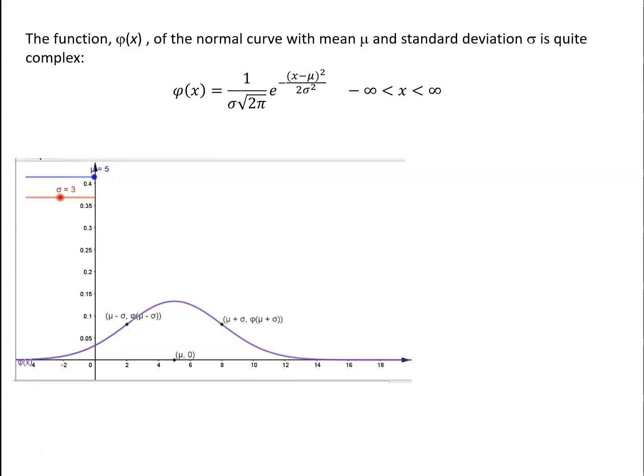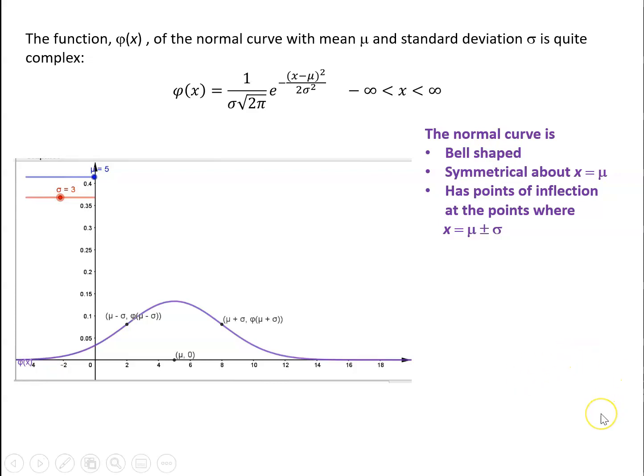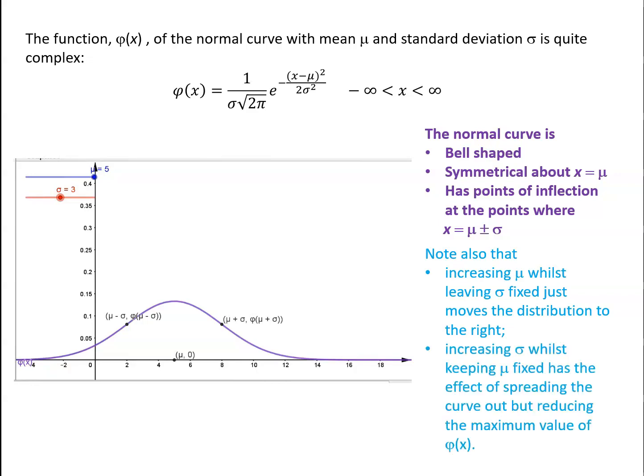So we've seen that the normal distribution is bell-shaped whatever the value of μ and σ. It's always symmetrical about x equals μ. It has points of inflection at the points where x is μ plus the standard deviation, and at the point where x is μ minus the standard deviation. And as we commented, increasing μ while leaving σ fixed just moves the distribution to the right. And increasing the standard deviation while keeping μ fixed has the effect of spreading the curve out but reducing the maximum value of φ(x).